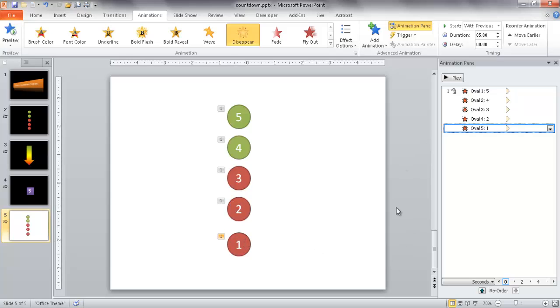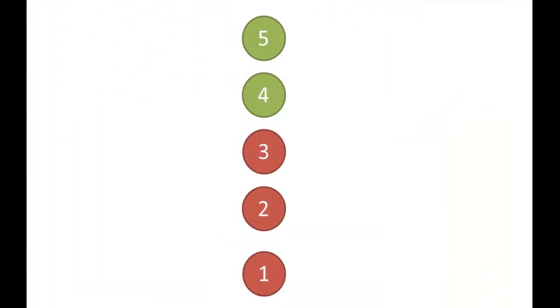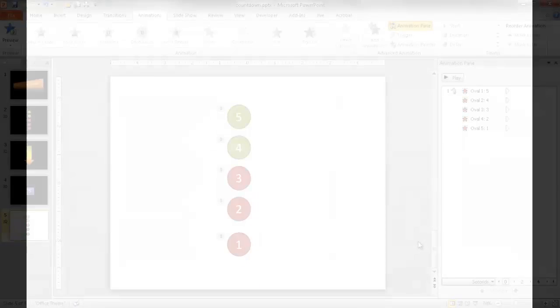If I go ahead and start the animation and put it into slide show view and press the space bar, you'll see 5 goes first, then 4, 3, 2, 1. And so that's the countdown timer for that first example.